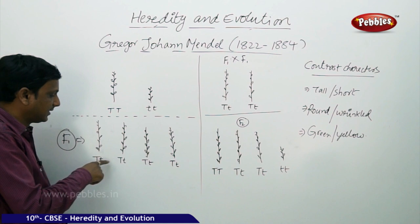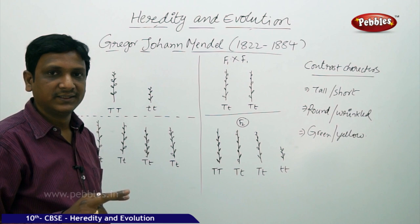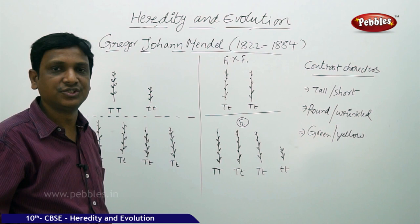In each case — second, third, and fourth — the gene combination is capital T, small t. All four plants have both genes: one expressing tallness, one expressing shortness. But outside, only one thing is seen. A plant can never be short and tall at the same time — it is either short or tall. Here it is only tall because it is the dominant character.